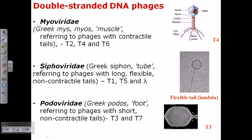We have already talked about Siphoviridae — an example is the lambda phage, which you can find in another video on my YouTube channel. Siphoviridae have a tube-like structure — the name comes from the Greek word for siphon, meaning a tube. Their tail is long, flexible, and non-contractile.